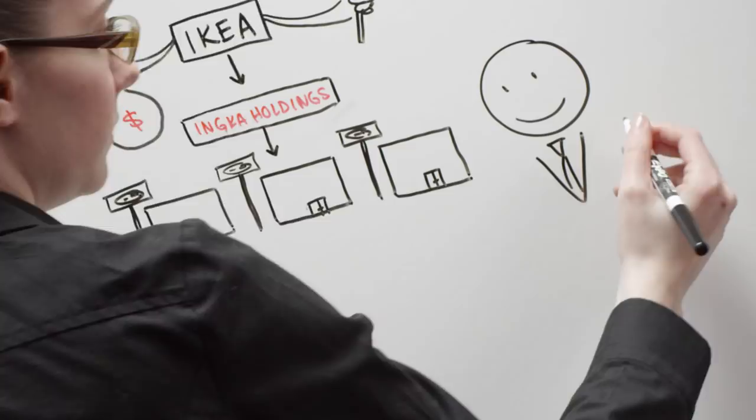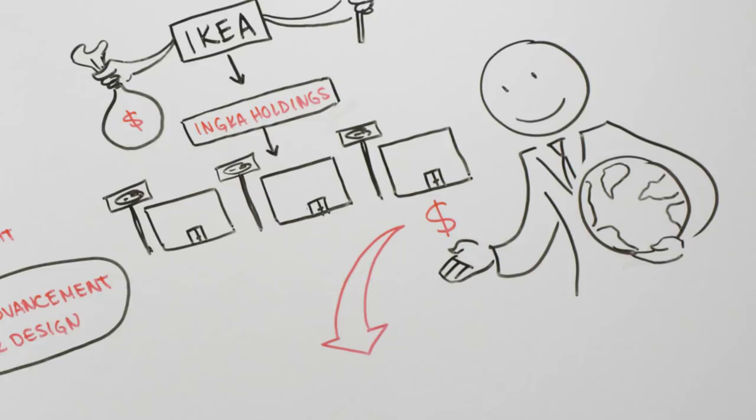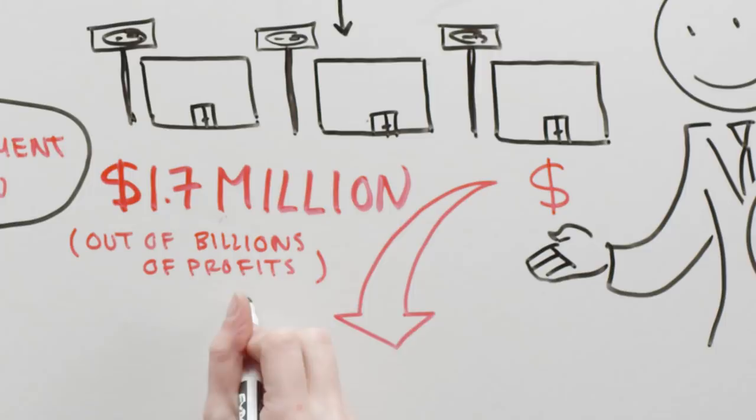Consider the fact that the Stichting Inka Foundation only donated $1.7 million, out of billions in profits, to a design school, which is in line with the foundation's mission. But the rest of the money goes to IKEA stores and into savings, as a cushion for the future.